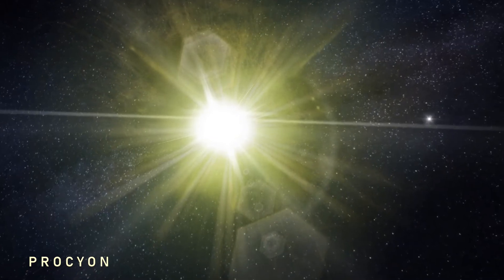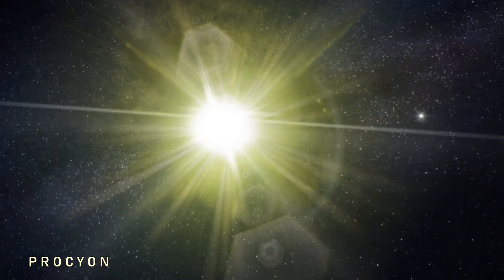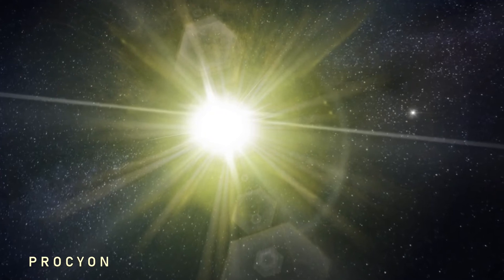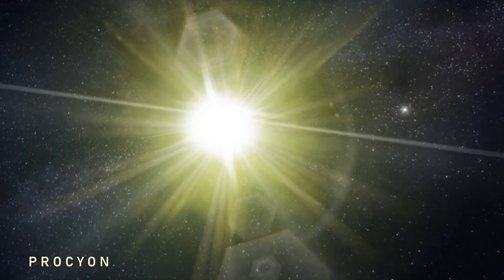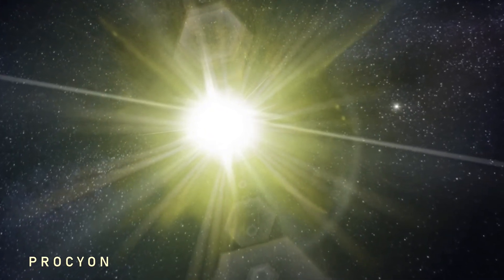Procyon is the brightest star in the constellation of Canis Minor and the system lies at a distance of just 11.46 light years. It's therefore one of Earth's nearest stellar neighbors.